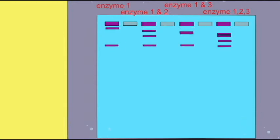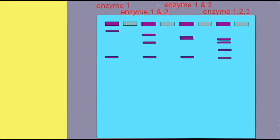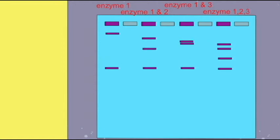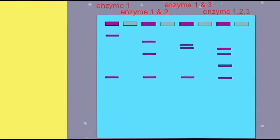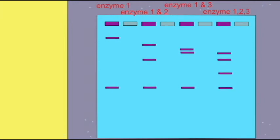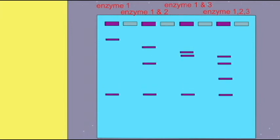It created two pieces of DNA which were unequal in size—one was larger than the other. You can see this by the distance between them. When we combine enzymes 1 and 3, you can see that it also made one additional cut because there once again are three bands of DNA, where originally with just enzyme 1 there were two.